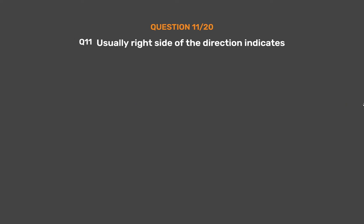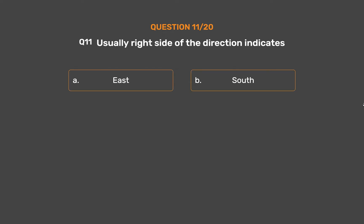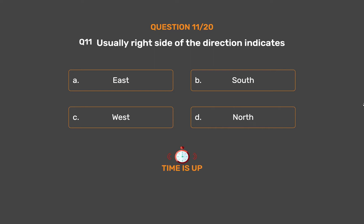Question number 11. Usually the right side of the map indicates direction. Option B: South. Option C: West. Option D: North. The correct answer is Option A: East.